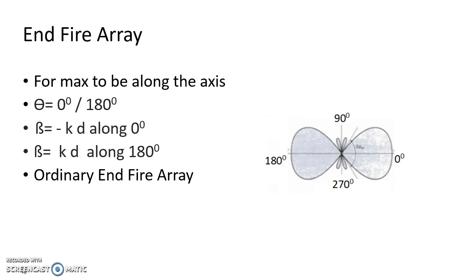We also discussed the Endfire Array, where the maximum radiation pattern exists along the axis of the array. We observed two values for the progressive phase shift: for the maximum to be along 0 degrees, beta should equal minus kd, and for the maximum to lie along 180 degrees, the progressive phase shift value should equal kd, where d is the spacing between the elements.